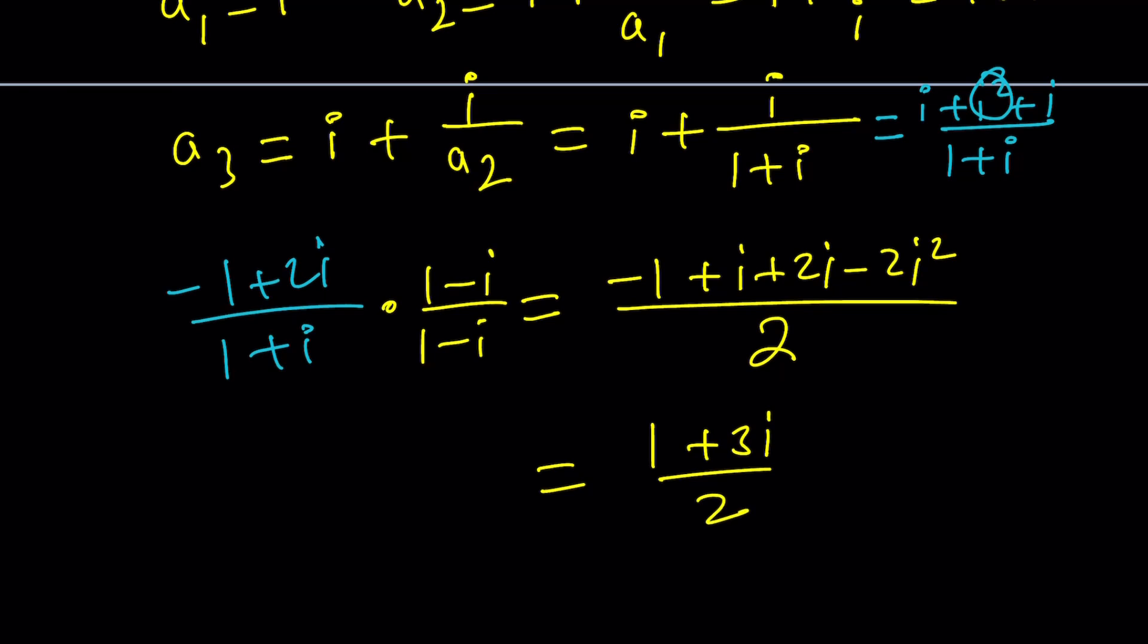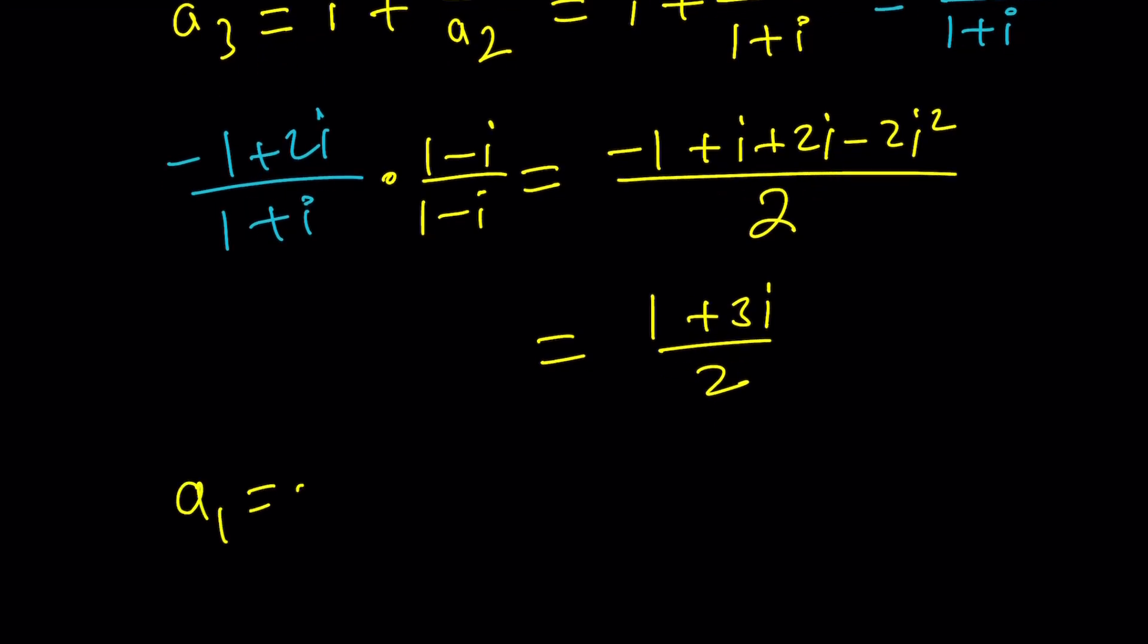So that's going to be our third term of the sequence. But how do you define this in general? You can kind of define it this way. a sub 1 is i and then a sub n can be written as i plus i over a sub n minus 1. So that when n is equal to, of course, n in this case needs to be greater than one, the minimum it can be is two because we don't have anything as a sub zero. We didn't define it that way. But recursively, basically, you can define a sequence.